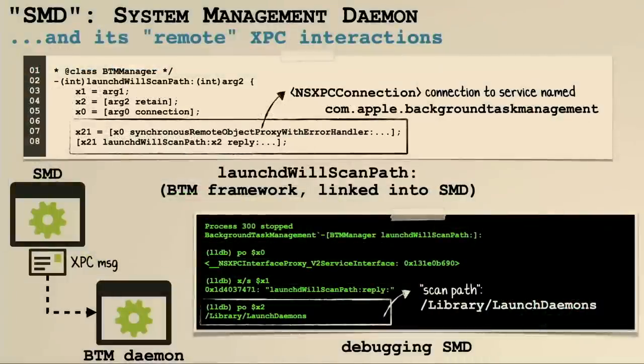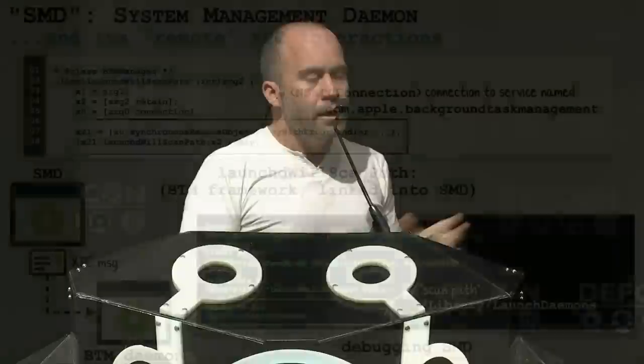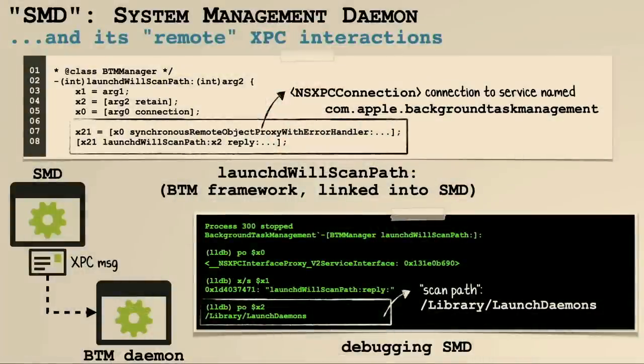Digging in a little more and looking at some method names from the log messages, we see that SMD will generate an XPC connection to a service called com.apple.backgroundtaskmanagement. XPC is a Mac-specific IPC — interprocess communication mechanism — that allows one process to talk to another, to send messages and also invoke methods and code in the remote process. BTM utilizes this heavily. If we poke around in the debugger, we can see that the scan path SMD is looking at is the launch daemon directory, where our persistent item was just placed.